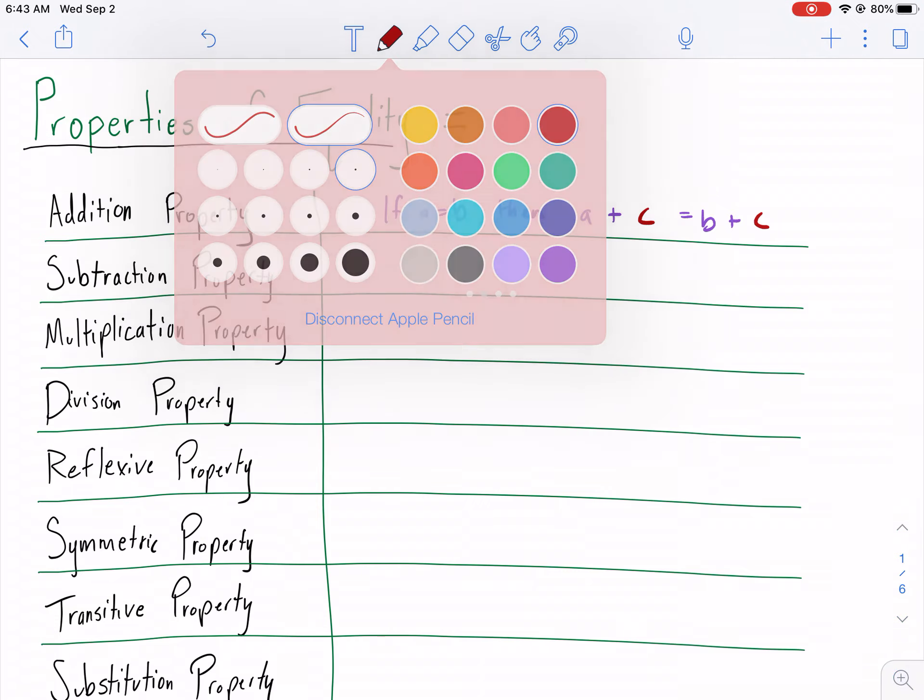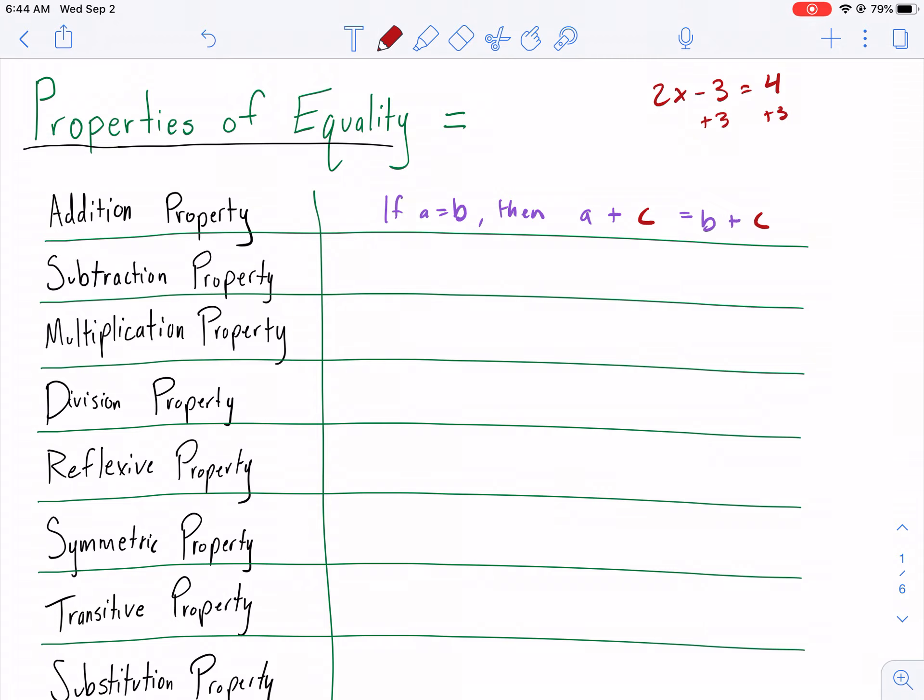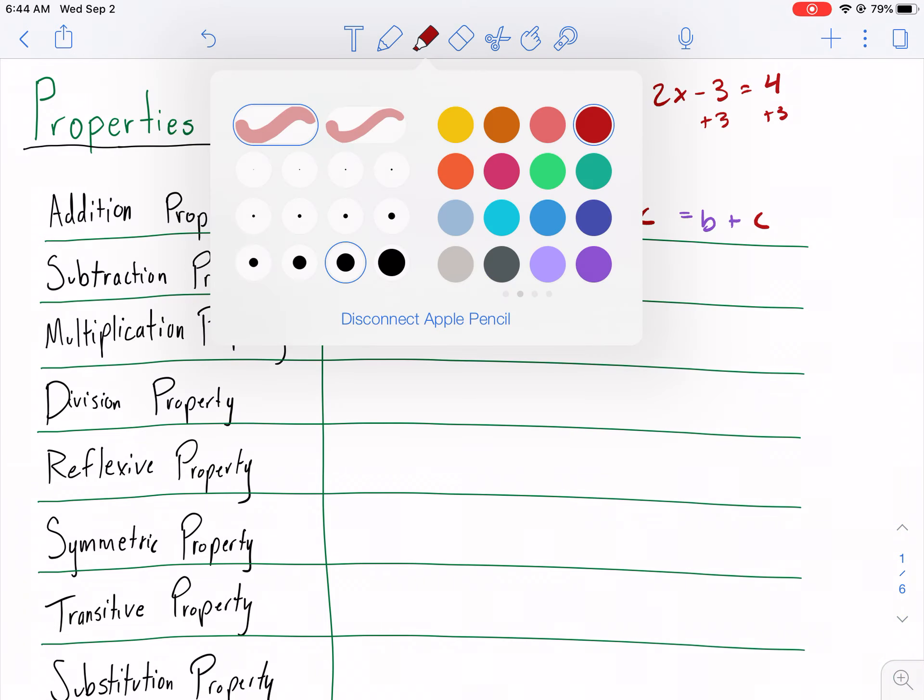What we did there is something that is fundamental to solving equations. You can add something to both sides of the equal sign, and it does not change the value. Something that you're very familiar with when you're solving something like 2x minus 3 equals 4. You would add 3 to both sides, and that is okay. That's an okay move to do because it is a property of equality. It keeps the equation balanced because you do the same thing to both sides.